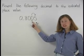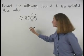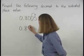This means we add 1 to the digit in the rounding place, so 0 becomes 1. So we have 0.801.